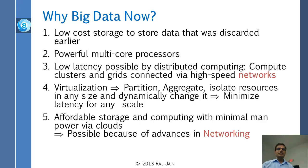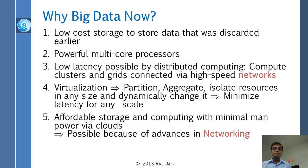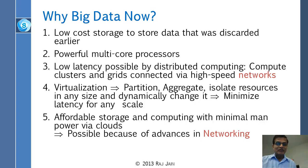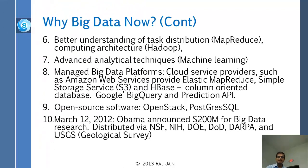Powerful multi-core processors make computing cheap. Low latency is possible by distributed computing — compute clusters and grids connected to high-speed networks. We don't just need one computer; we can use hundreds of computers together. Virtualization lets us partition resources, make them larger or smaller, isolate and dynamically change them. Affordable storage and computing with minimal manpower via clouds — you can just give it to the cloud and it's all automated.